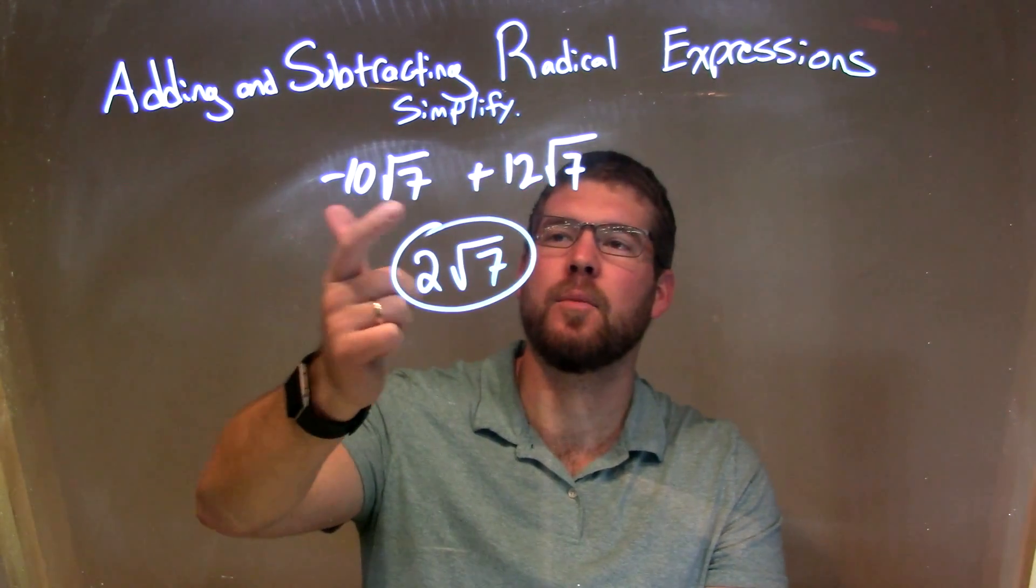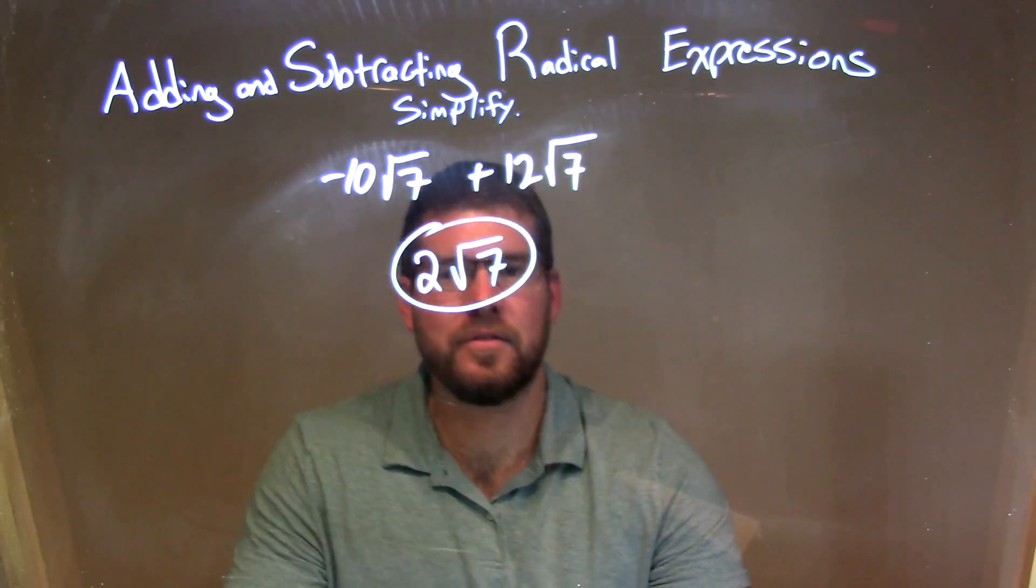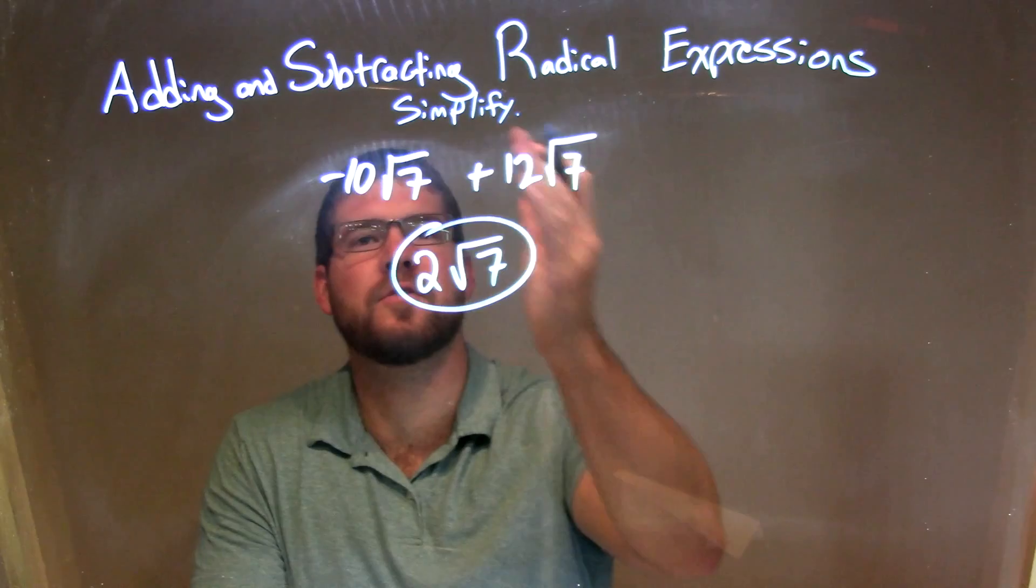So let's recap. We're given negative 10 times the square root of 7 plus 12 times the square root of 7. Since they both have the square root of 7 there, we look to the number in front of the square root of 7,